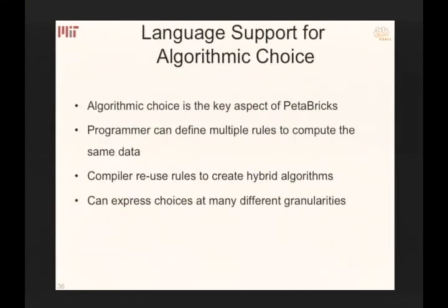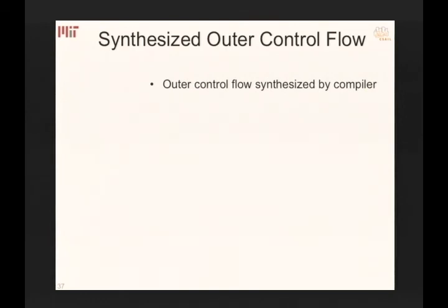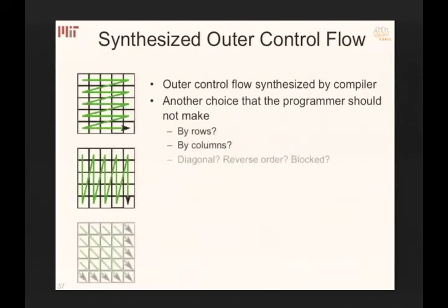Strassen isn't always the best either — it has bad cache behavior and sometimes other blocking is better. In PetaBricks, you say 'here's another way of doing it, you figure out what works best.' We made algorithmic choice a key aspect of the language — programmers can easily give multiple ways of solving a problem, and the compiler uses them to find the right hybrid or poly-algorithm. We also synthesized out control flow so the compiler can choose to iterate by rows, columns, diagonals, reverse order, or in parallel.